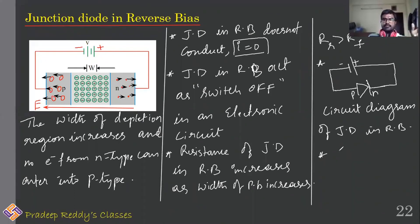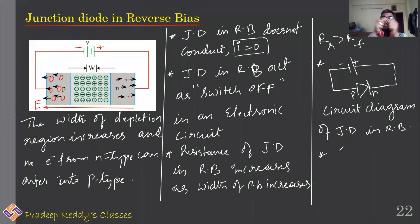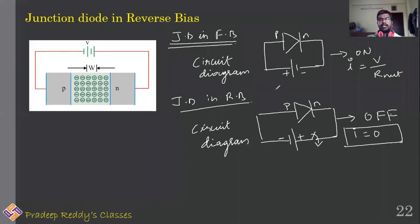In reverse bias, there is no conduction until a very large negative potential is applied. As the potential difference increases, electrons and holes are strongly moved outward, further increasing the width of the depletion region, so current remains zero. In summary: in forward bias, current is maximum (I = V/R_net) and the diode acts as switch on; in reverse bias, current I equals zero and the diode acts as switch off.